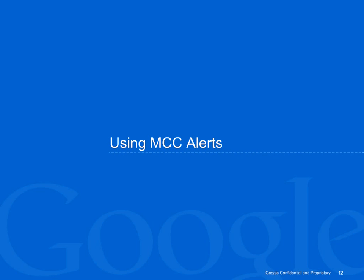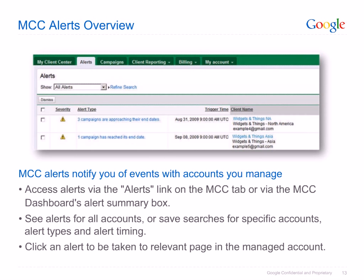Now let's take a look at MCC alerts. MCC alerts notify you of important events such as payment, creative, or budget issues that may affect the accounts you manage. You can access alerts by clicking on the alerts link under your My Client Center tab or by clicking on the alert summary box under your MCC dashboard. By default, you'll see all new alerts across all accounts linked to your MCC. But in a few short steps, you can search for specific types of alerts and save those searches for later use.